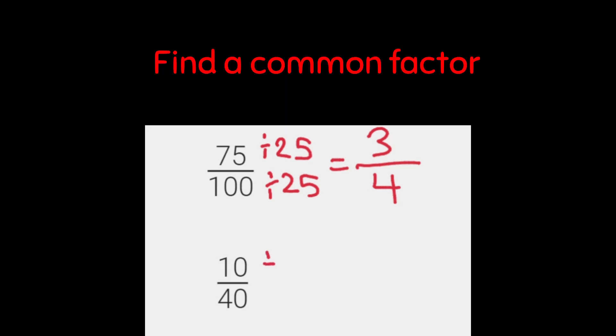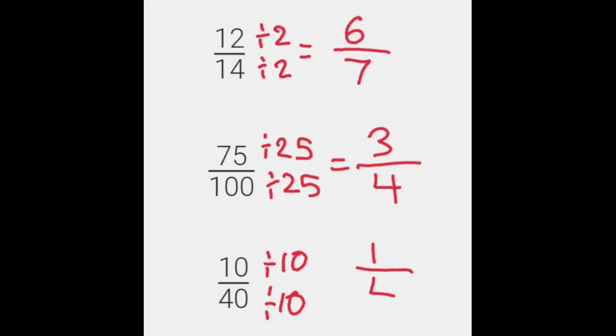10 over 40, we're going to divide by 10. So how many times does 10 go into 10? It goes in once. How many times does 10 go into 40? It goes in 4. So 1 quarter is equivalent to 10 over 40.